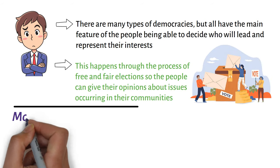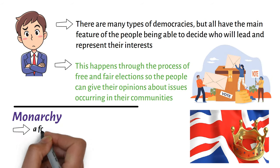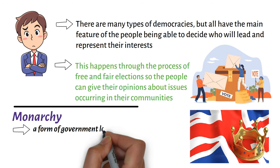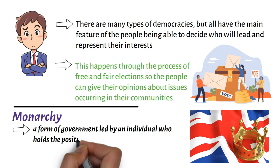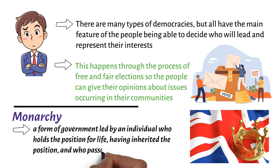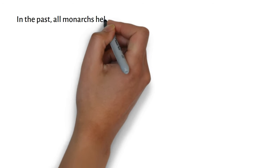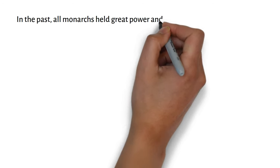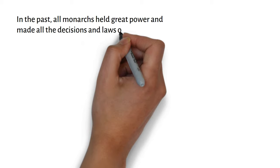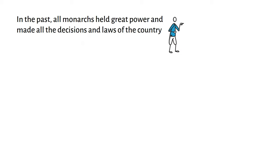On Monarchy. A monarchy is a form of government led by an individual who holds the position for life, having inherited the position, and who passes it on to a relative, which is usually a son or daughter. In the past, all monarchs held great power and made all the decisions and laws of the country. This is known as absolute monarchy.